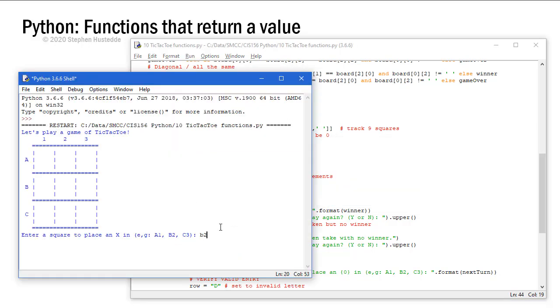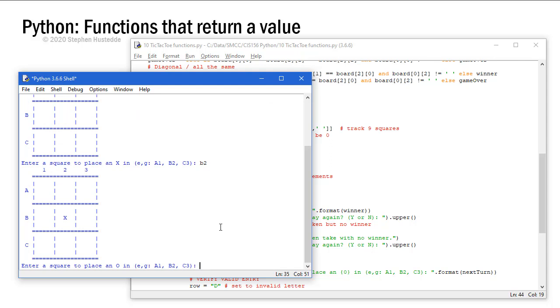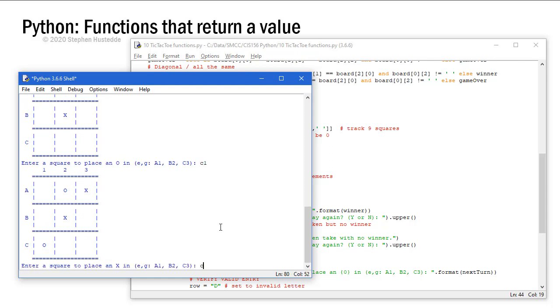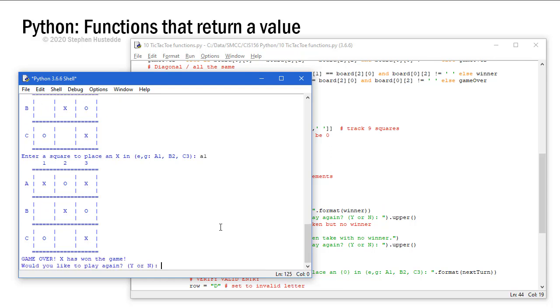So I'm going to put an X in B2. Let's say that O does A2. X will go into A3. O has to counter in C1. And now X goes in for the kill with a C3. And there's two possible ways for X to win. O is going to hope they only see one and does the B3. But unfortunately, X comes in for the win diagonally. And we're told gameOver, X has won the game. So that's working.